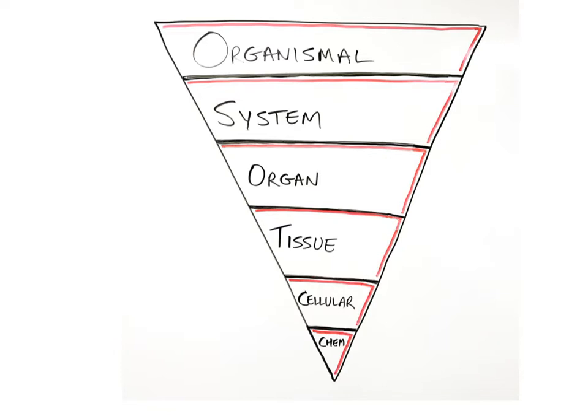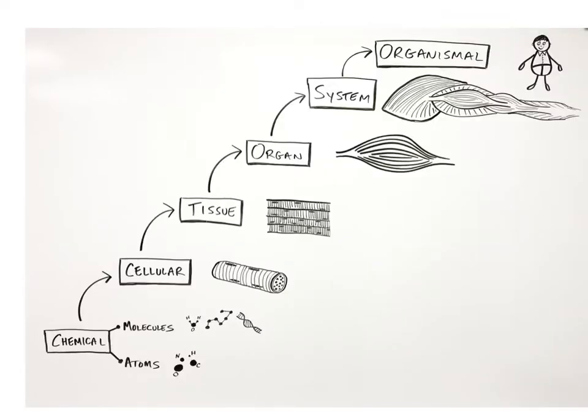The smallest level of structural organization is the chemical level, which is composed of atoms and molecules. Atoms such as hydrogen, nitrogen, carbon, and oxygen are constantly engaged in various chemical reactions throughout the body. Molecules are two or more atoms bonded together. Examples of molecules include water, carbohydrates like starch, and DNA.